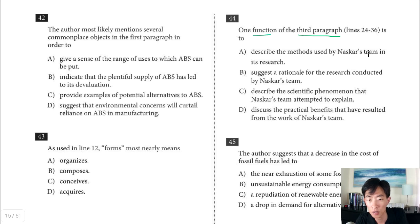Choice A. Describe the methods used by Naskar's team in its research. So nothing about methods used in research totally off. Choice B. Suggest a rationale for the research conducted by Naskar's team. So rationale is the reasoning. This one could work because, you know, obviously the rationale is to make something that's commercially useful and not as expensive as other renewable fuels. Choice C. Describe the scientific phenomenon that Naskar's team attempted to explain. So really no scientific phenomenon going on in that passage other than the fact that lignin makes up the cell walls of plants. Choice D. Discuss the practical benefits that have resulted from the work of Naskar's team. I think this is kind of a little off in terms of time. If they want to talk about practical benefits that may result in the future from their work, that could work. But it hasn't happened really yet. So choice D is out and B is going to be our answer.